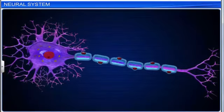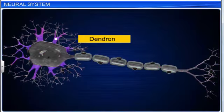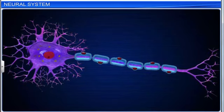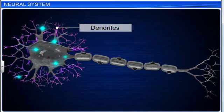Nerve processes are of two types: dendrons and axons. Dendrons can be one or more in number. Their fine branches are called dendrites. They transmit impulses towards the cell body.